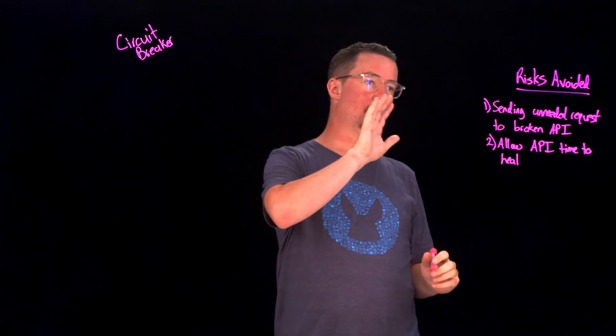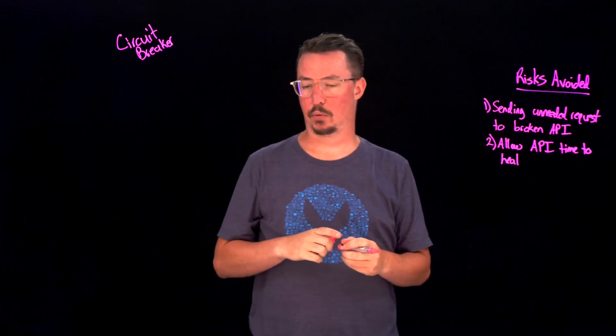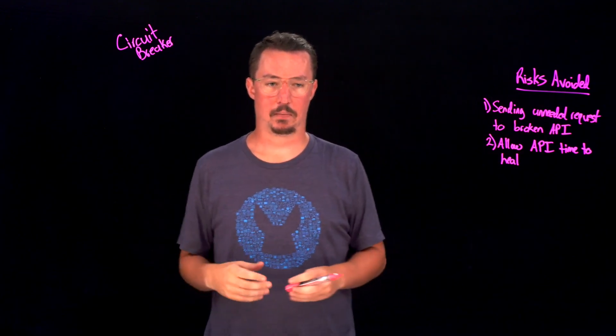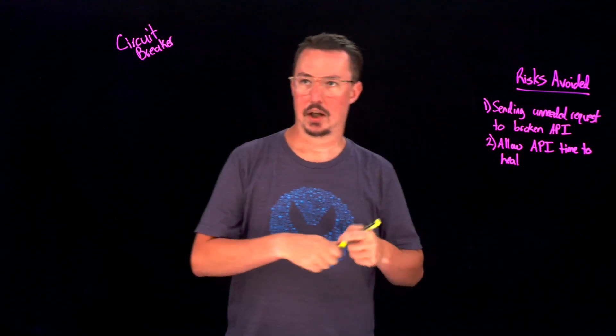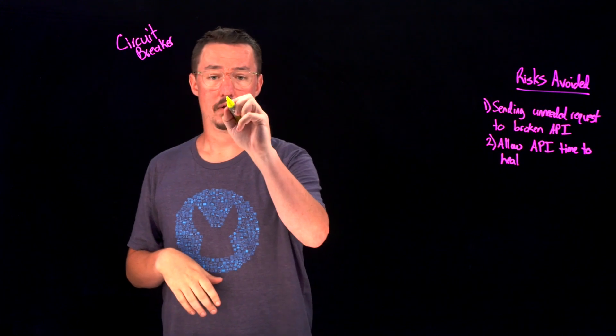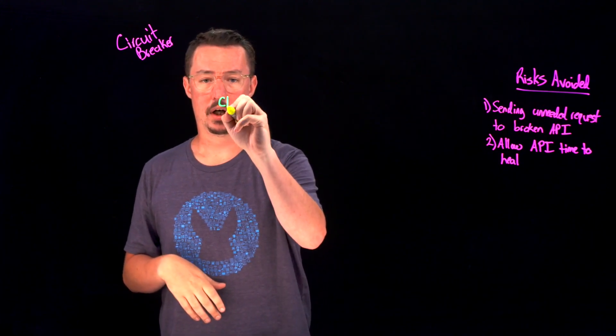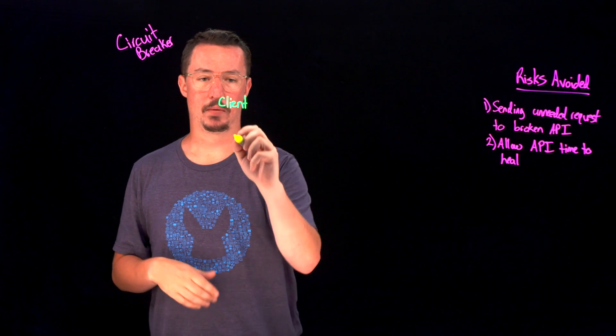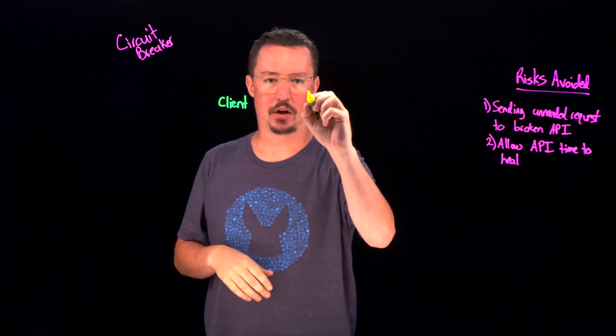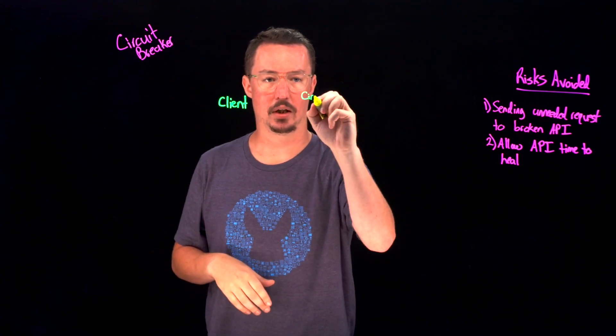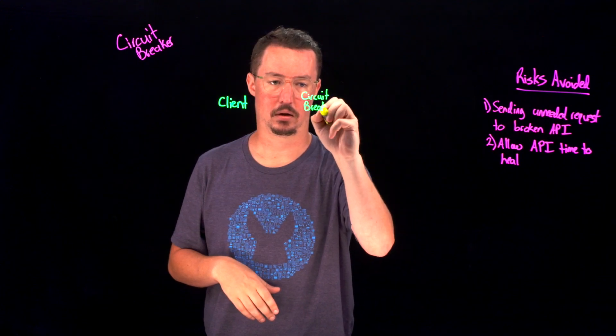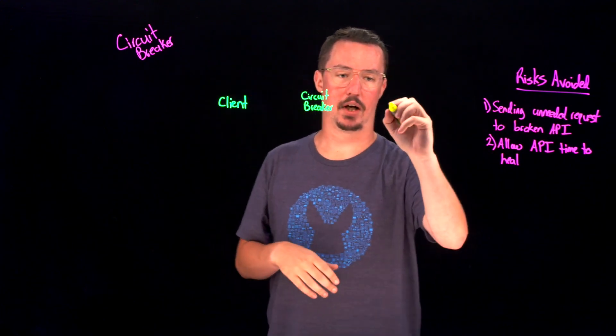All right. So now that we understand some of the risks that we're avoiding or some of the things that we're allowing the API to do, let's talk about what the actual pattern itself looks like. So if we start, basically, we're going to have three components associated with this. Firstly, we're going to have our client, which will be the one actually sending the request. In between the client and the API, this is where we'll have our circuit breaker. And then finally, we have our API.